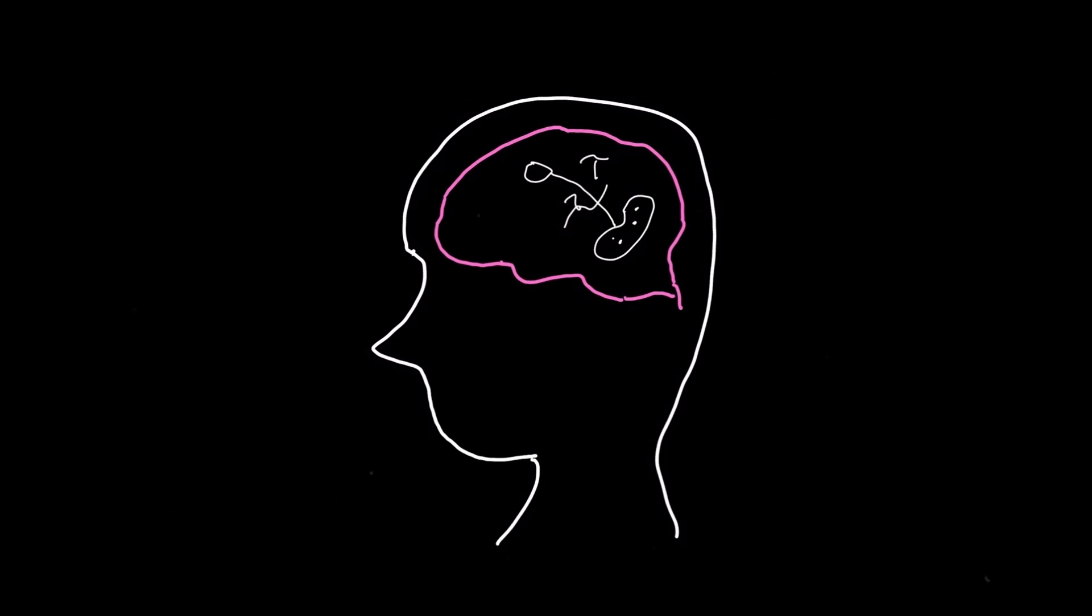It's been found that in dementia, there's a vast amount of misfolded tau proteins which spread throughout the brain.